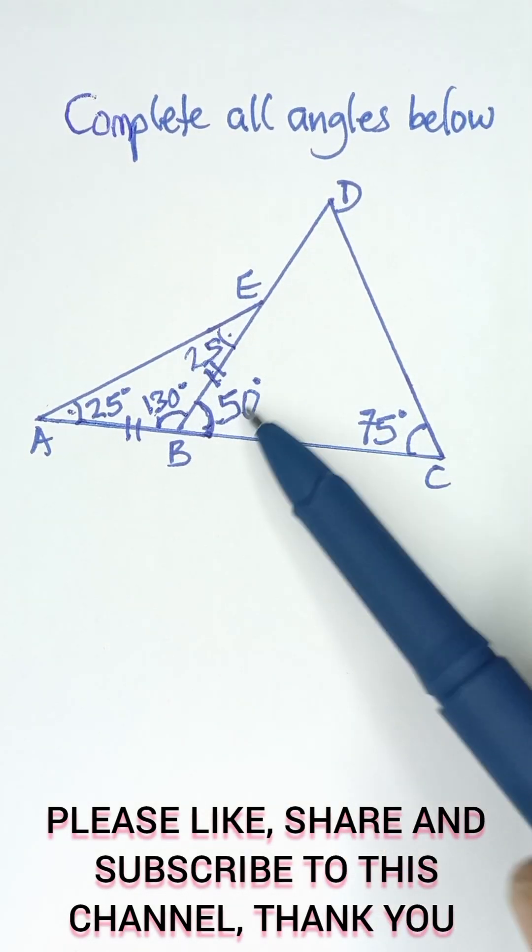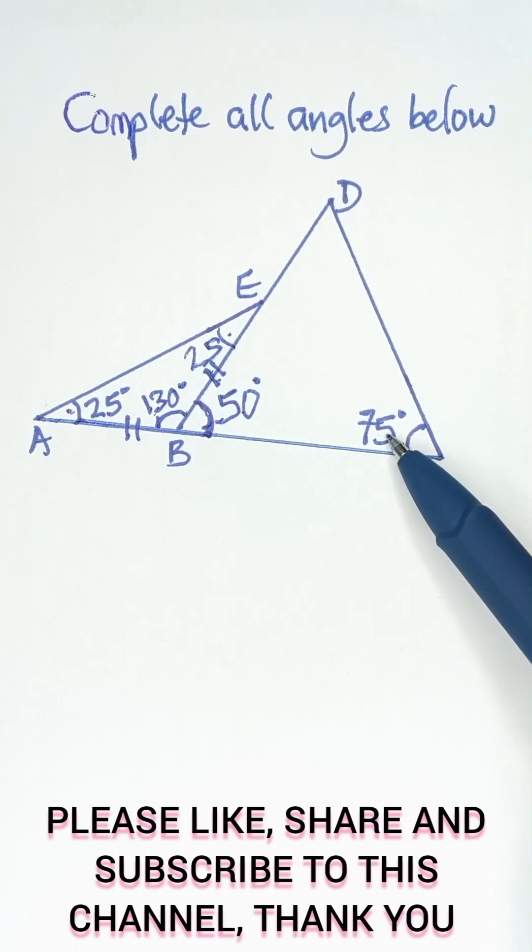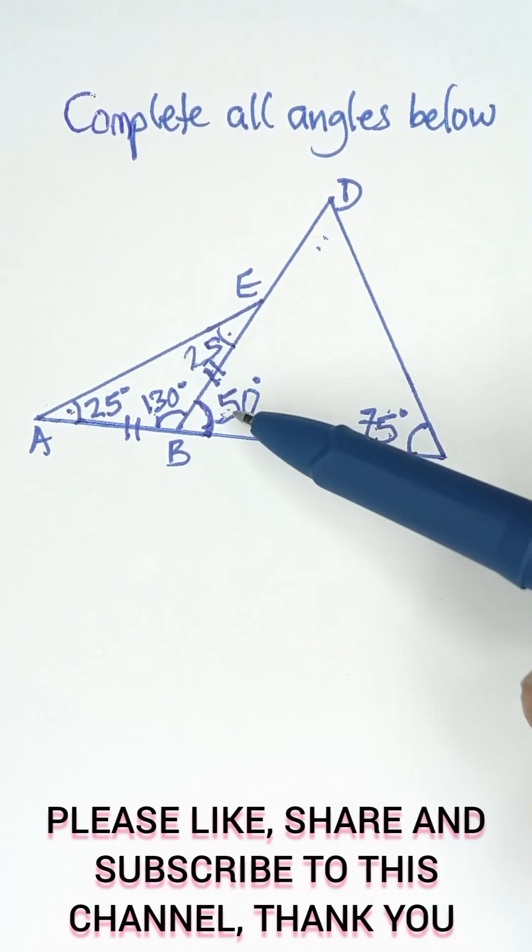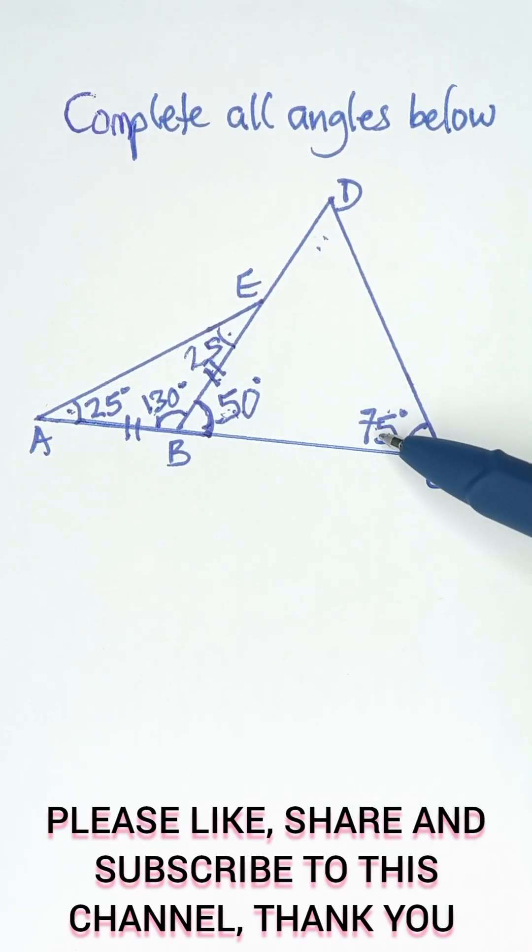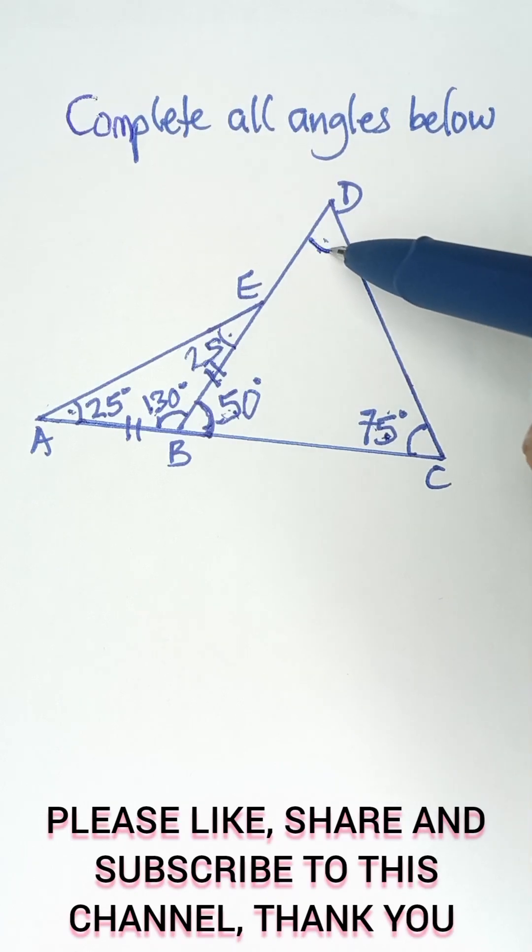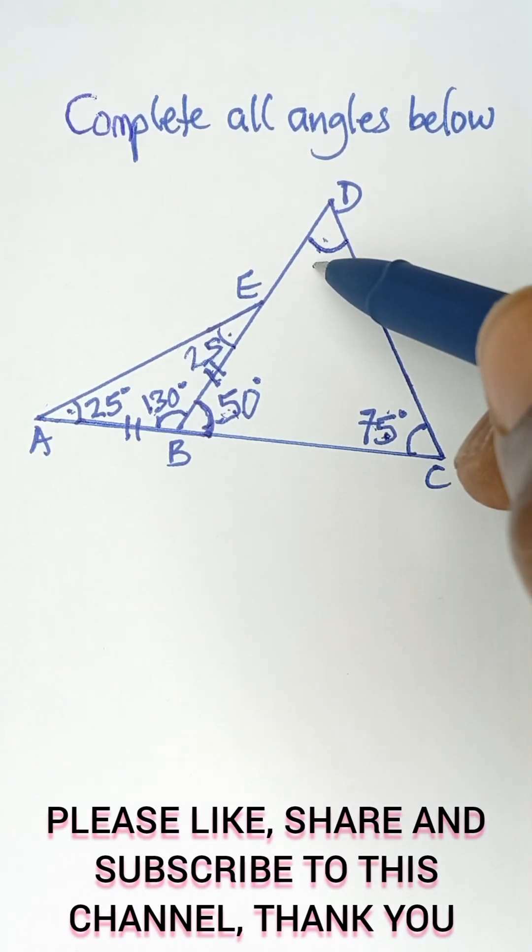Finally, 50 plus 75 plus this angle will give us 180 because sum of angles in a triangle is 180. So if this is 50 plus 75, that's 125. 125 subtracted from 180 will give us this remaining angle.